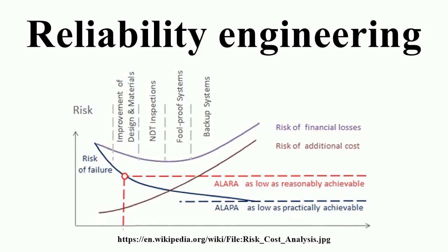In 1950, on the military side, a group called the Advisory Group on the Reliability of Electronic Equipment, AGREE, was born. This group recommended the following three main ways of working: improve component reliability; establish quality and reliability requirements for suppliers; and collect field data and find root causes of failures.